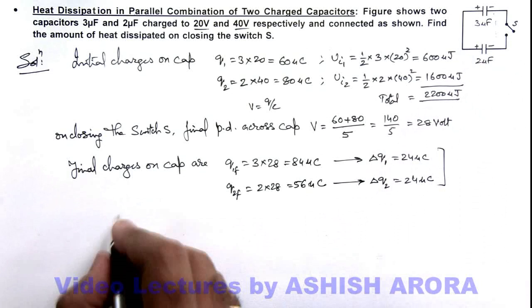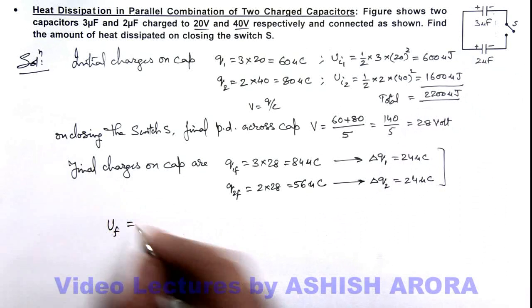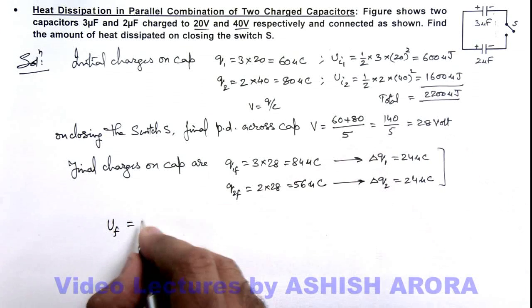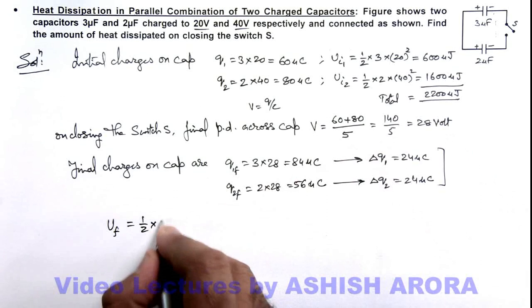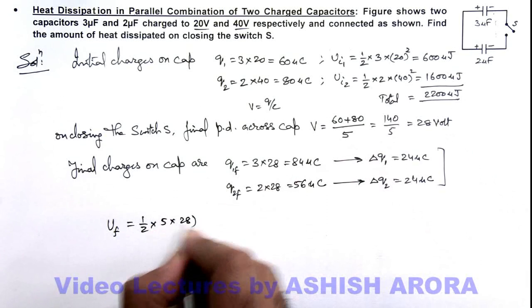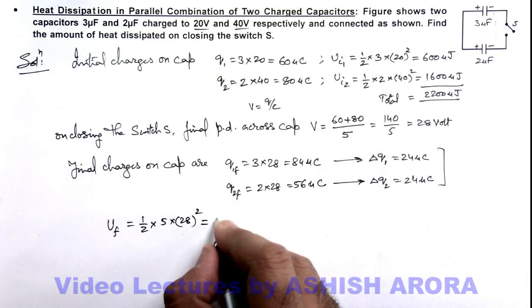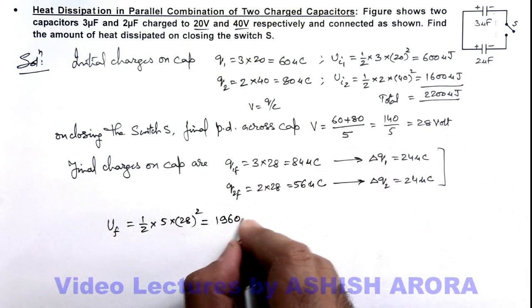The final energy stored in the system will be ½ × 5 × 28², which is ½CV². The numerical value is 1960 microjoules.